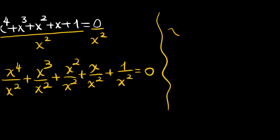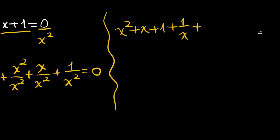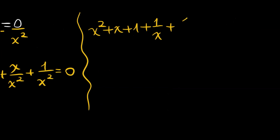After simplifying, we have: x squared, plus x, plus 1, plus 1 over x, plus 1 over x squared, and this is equal to 0.